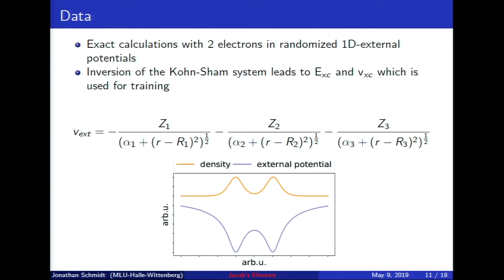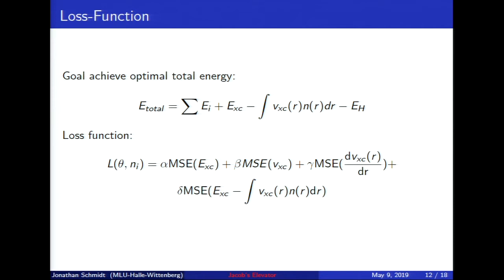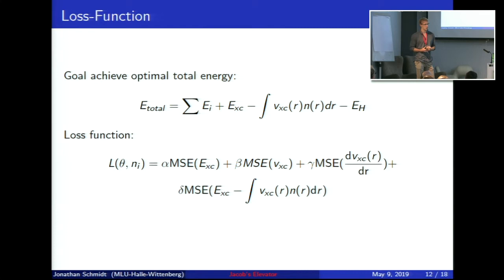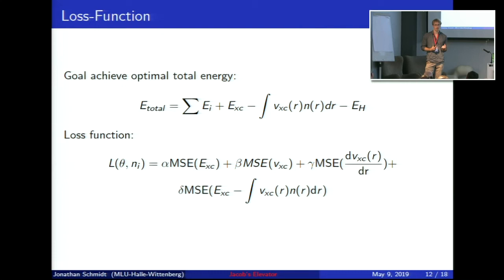We don't just want to fit the exchange-correlation energy and potential; we want to get good energies in self-consistent calculations. It turned out that to achieve this it was better to include not only the energy and the potential in the loss, but also the gradient of the potential, numerically calculated. For some neural networks it was also advantageous to include the integral over the potential and its difference with the exchange-correlation energy, which allows for some cancellation of errors that you would notice in the self-consistent calculation.